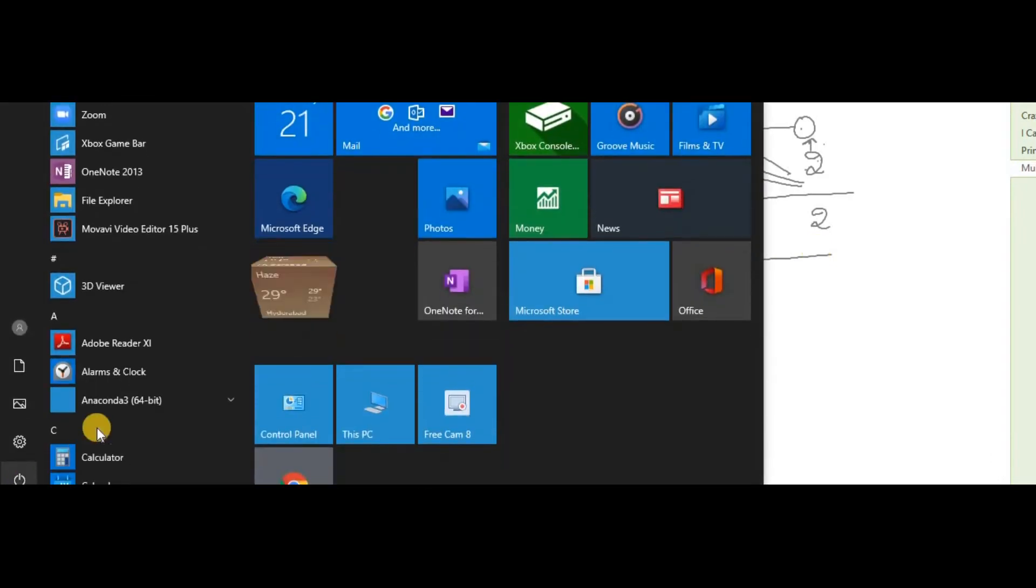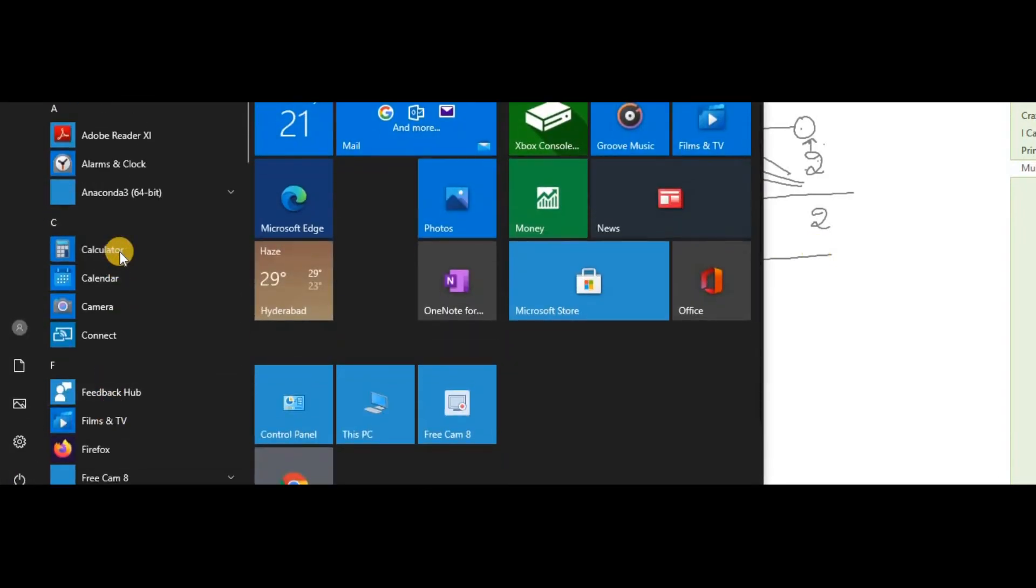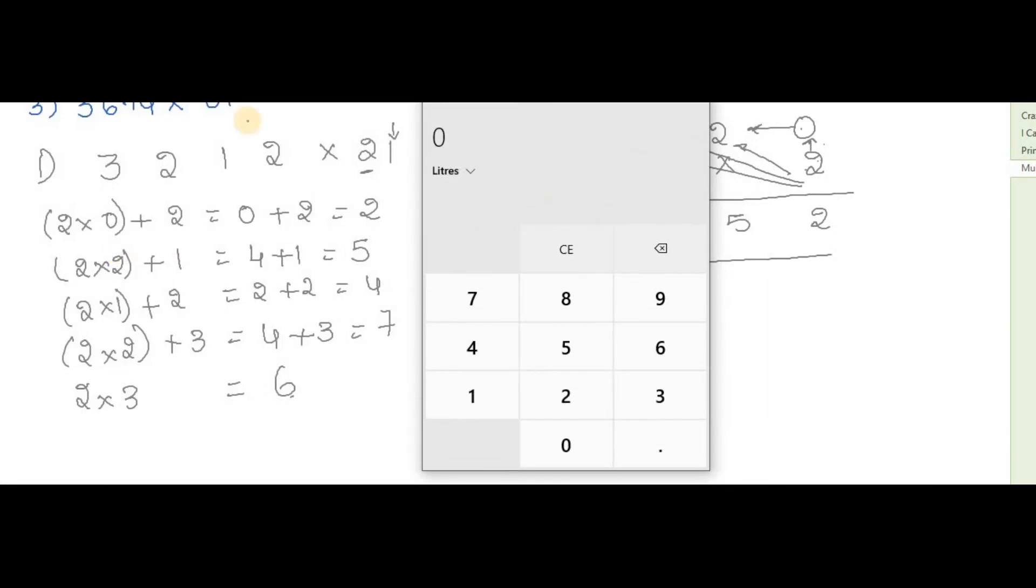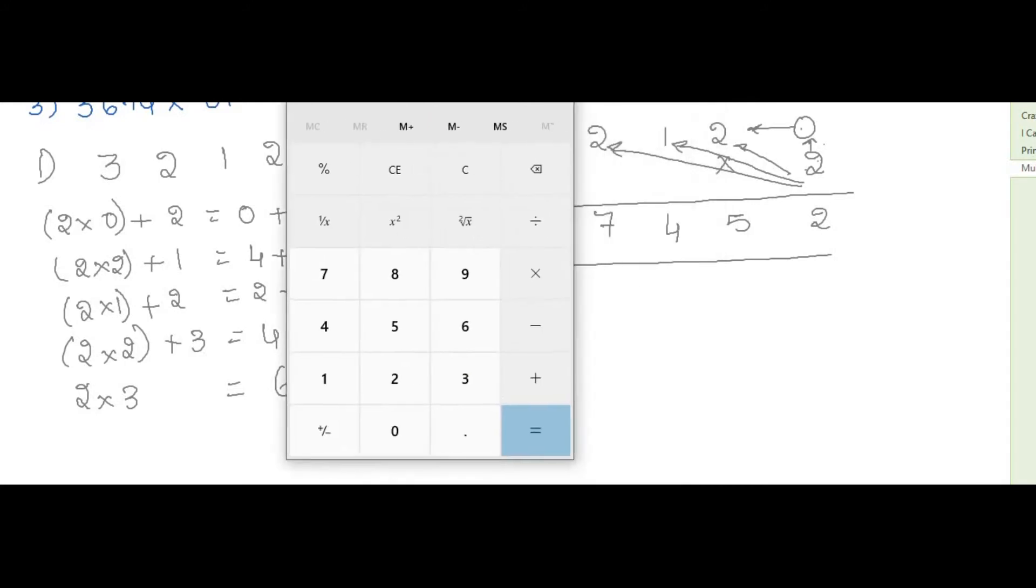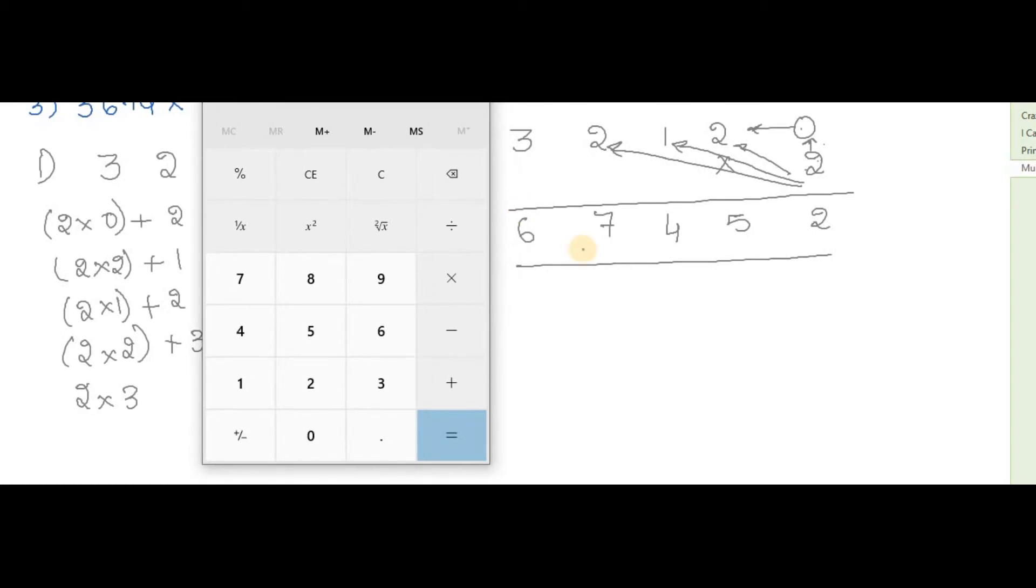Now we will find out whether it is right or wrong. I'll just open my standard calculator and I just want to know that 3212 multiplied by 21, and the answer is 67542. Did I get the same answer here?